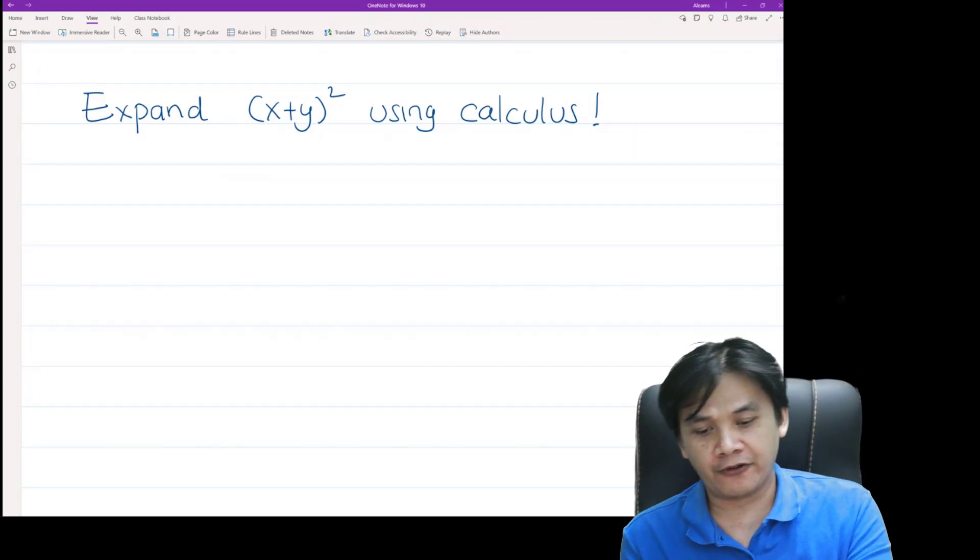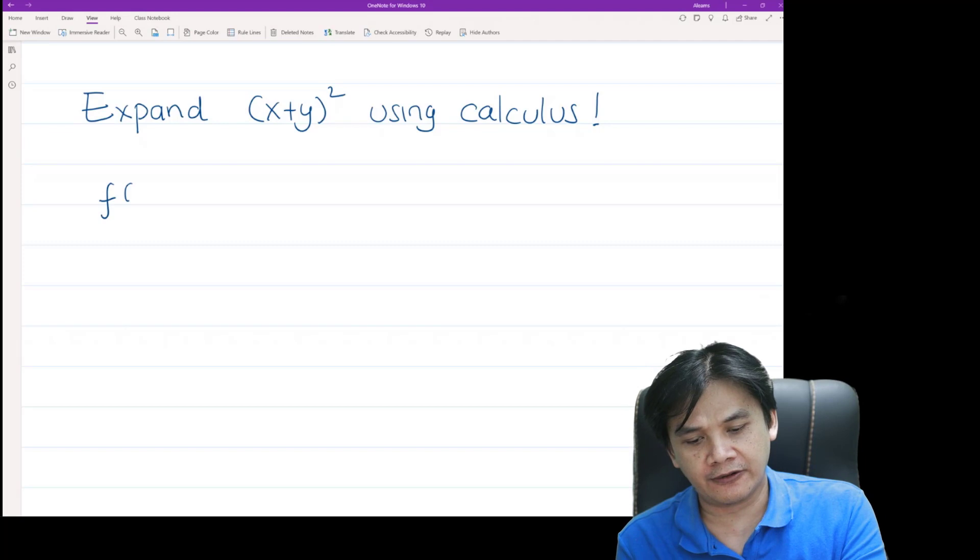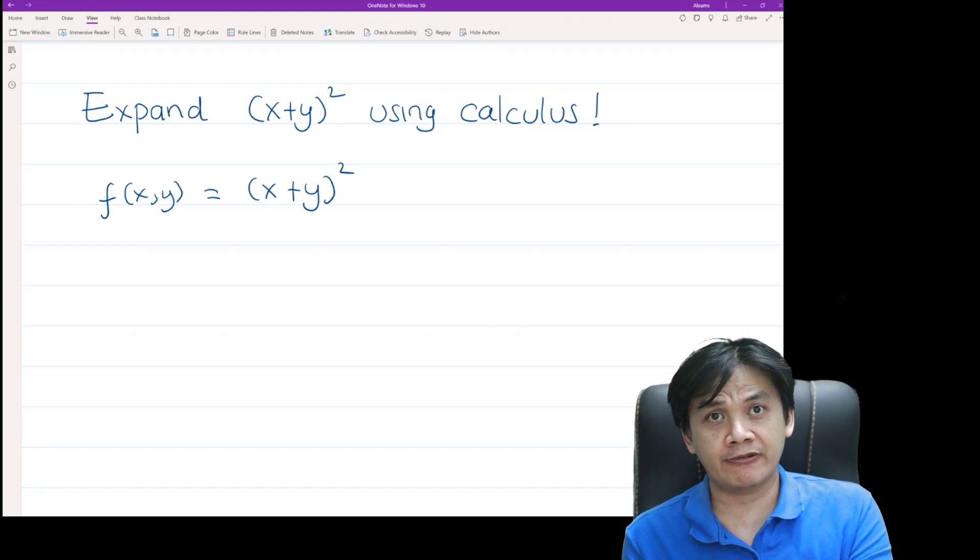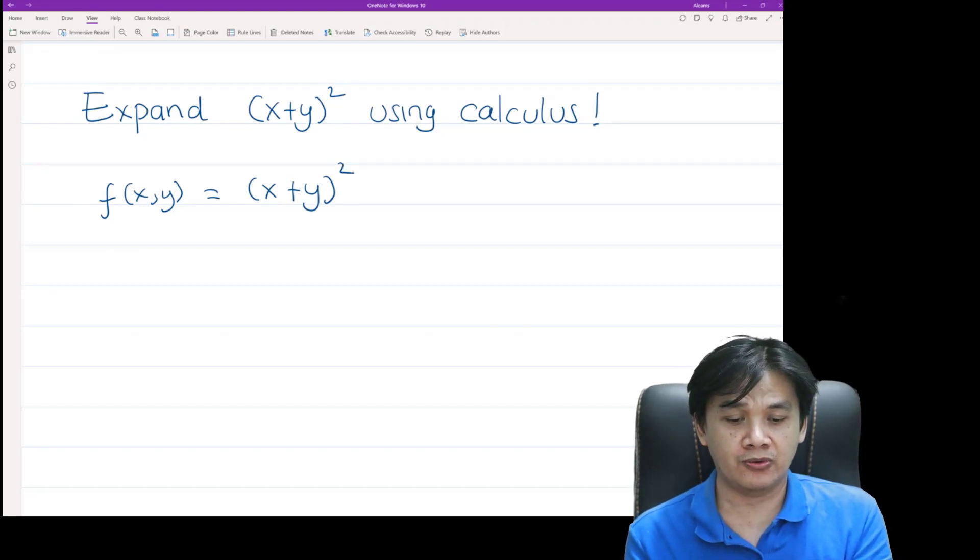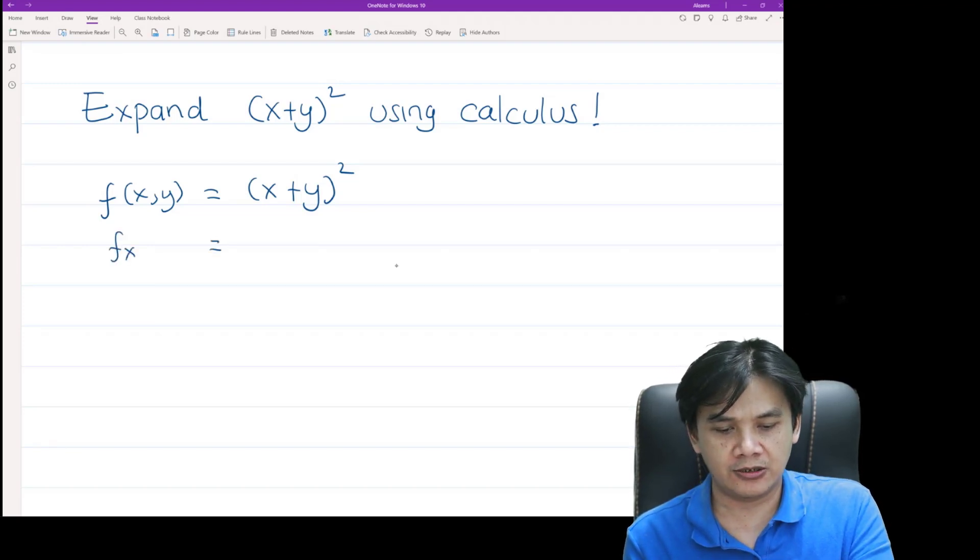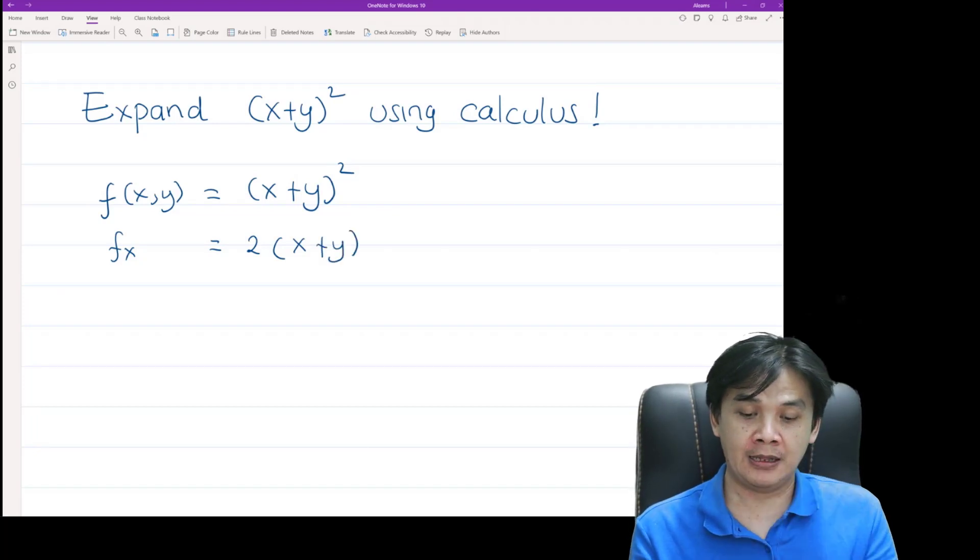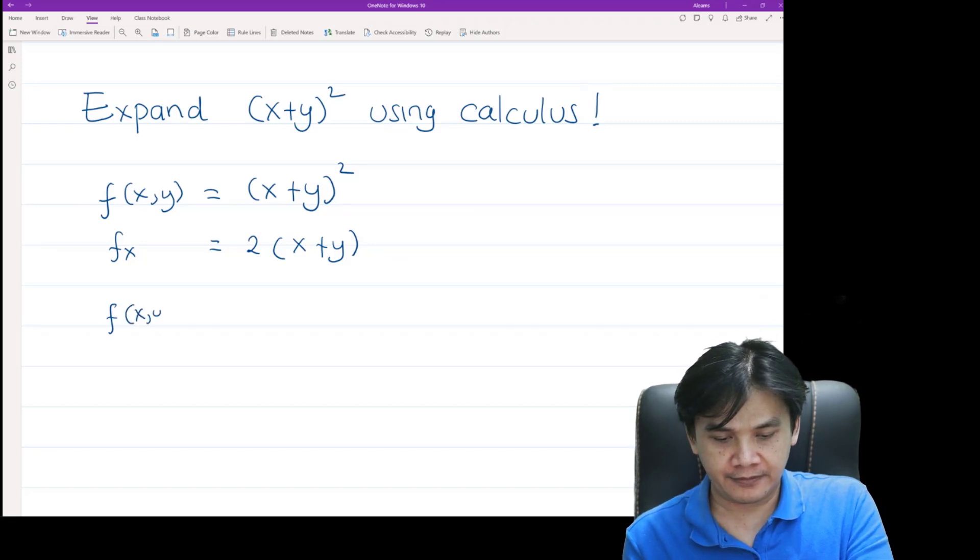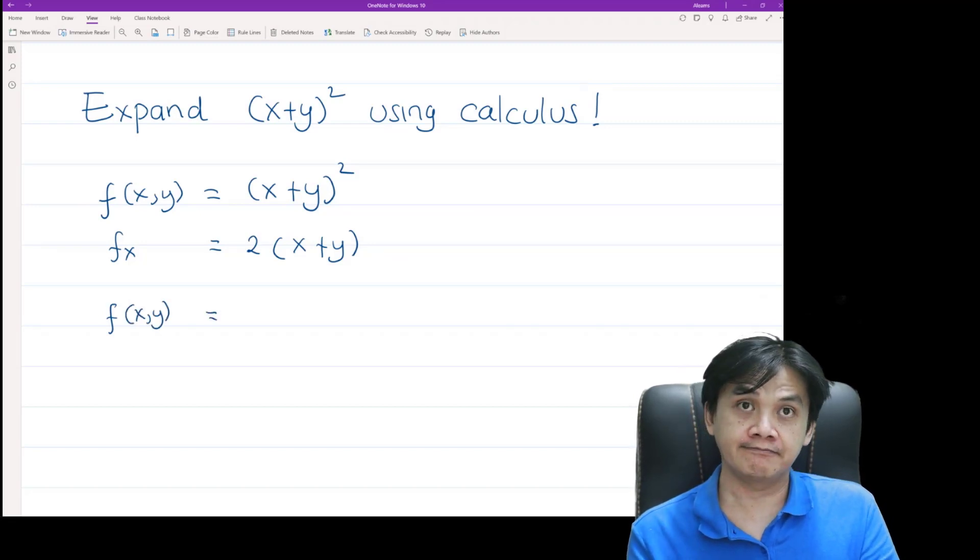First of all, we define a function of two variables which is (x+y)². Now we take the derivative of f with respect to x. So the partial derivative of f with respect to x is going to be twice of (x+y), right? Therefore, this is equal to 2x + 2y.